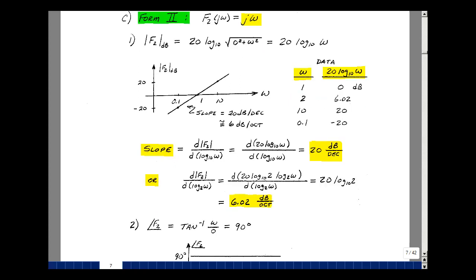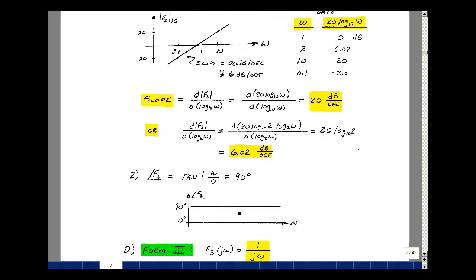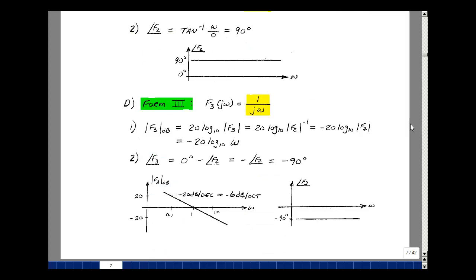Also, in my next form, I pick that F3 is equal to 1 over jω. The magnitude of F3 in dB, we could write symbolically as 20 log of the magnitude of F3, but F3 is the reciprocal of F2, so you could write that as the magnitude raised to the minus 1 power. Bring that minus 1 over here, and you get minus 20 log base 10 of the magnitude of F2, which we found to be just omega. Our result is minus 20 log base 10 of omega. We just take the last result and simply change the sign of every term.